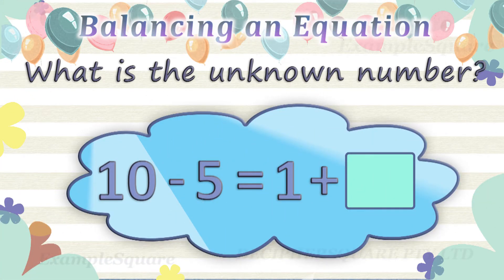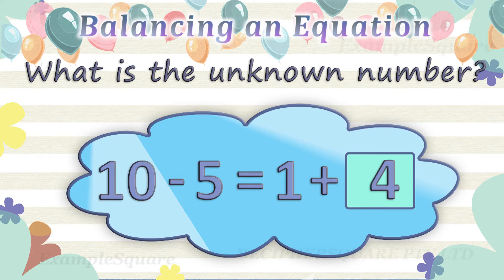In this equation, the left side is 10 minus 5 and the right side is 1 plus an unknown number. 10 minus 5 on the left side equals 5. For this equation to balance correctly, the right side should also be equal to 5. The right side is 1 plus an unknown number. 1 plus 4 equals 5, so the unknown number here is 4.